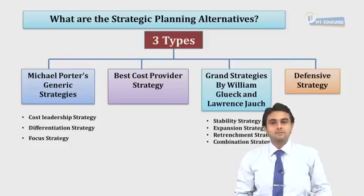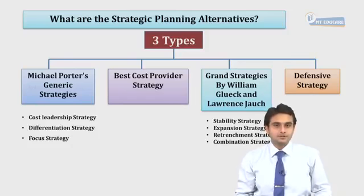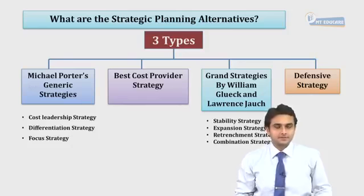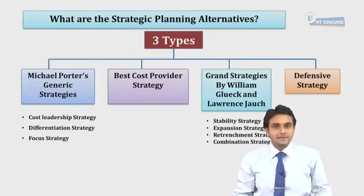The chapter mainly consists of Michael Porter's generic strategies, grand strategies by William Glueck and Lawrence Jauch, and defensive strategies. These are the three major types covered in this chapter.